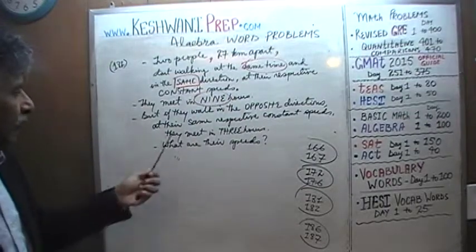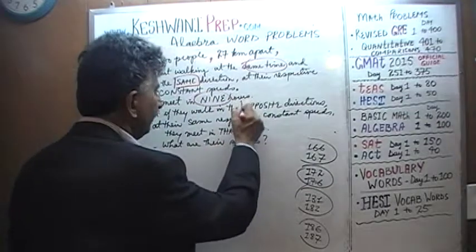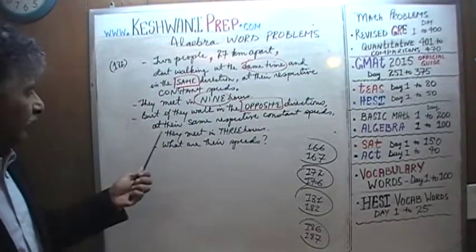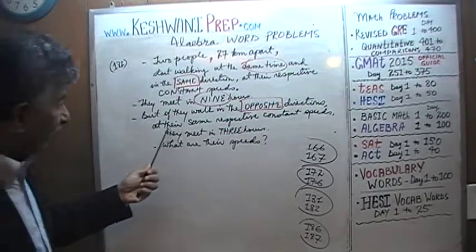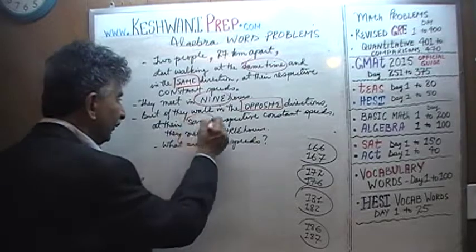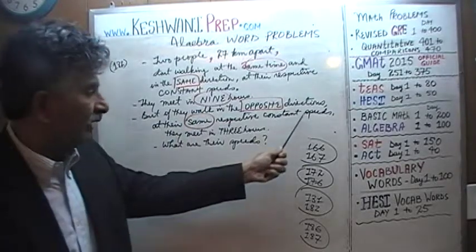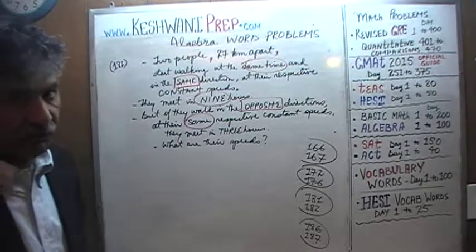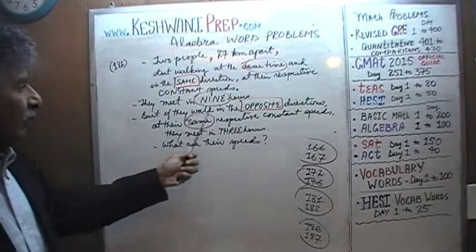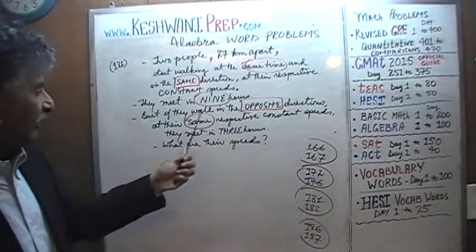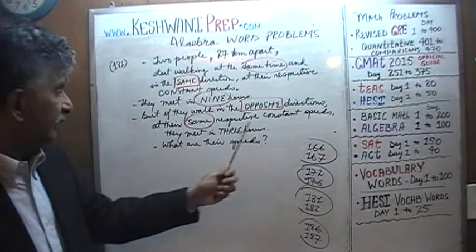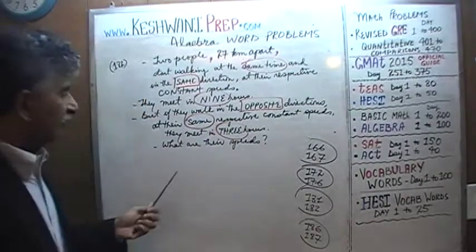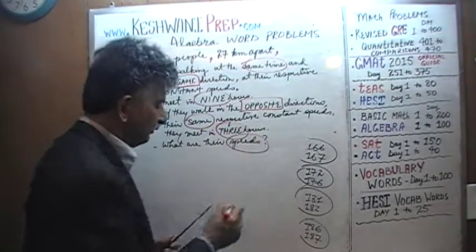We are further told that if they were to walk in the opposite directions, again at their same respective constant speeds — they do not change their speed, their speed is always constant — the question is: what are their speeds?